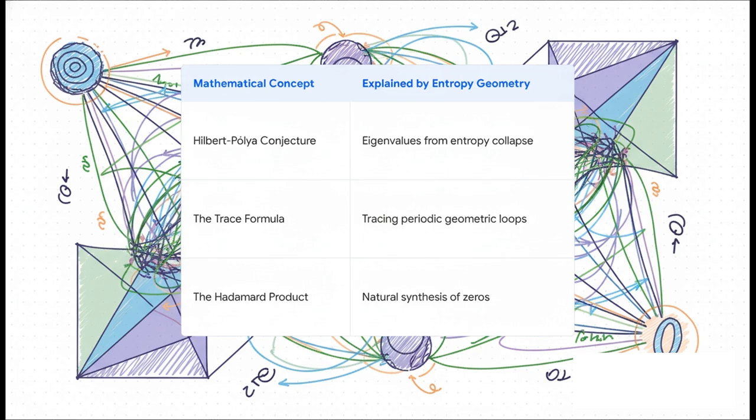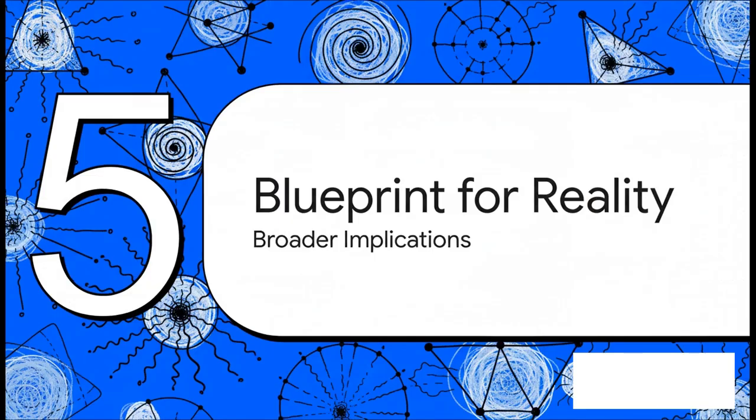So let's just step back for a second. If this geometric framework really does explain the primes, the implications are just staggering. This goes so far beyond just checking a box on an old math problem. It could be a whole new blueprint for understanding the structure of reality itself.